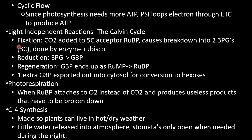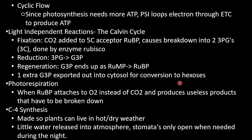The Calvin cycle has three parts. First, fixation: CO2 is added to a five-carbon acceptor, RuBP, causing its breakdown into two three-carbon molecules (3-PG), catalyzed by the enzyme RuBisCO — the most important enzyme to know for photosynthesis. Second, reduction: 3-PG is converted to G3P. Third, regeneration: G3P is converted back to RuBP. This process creates one extra G3P, which is exported to the cytosol for conversion to hexoses.